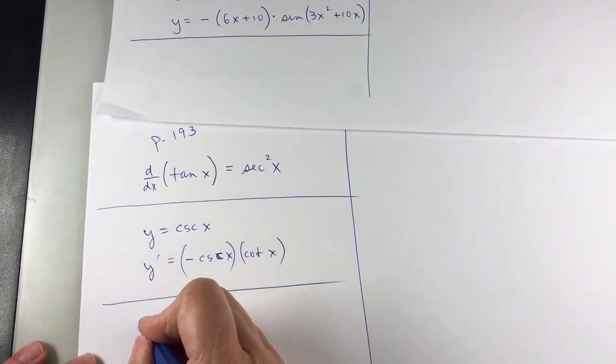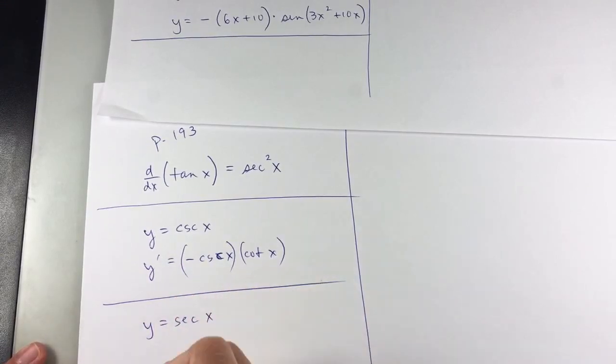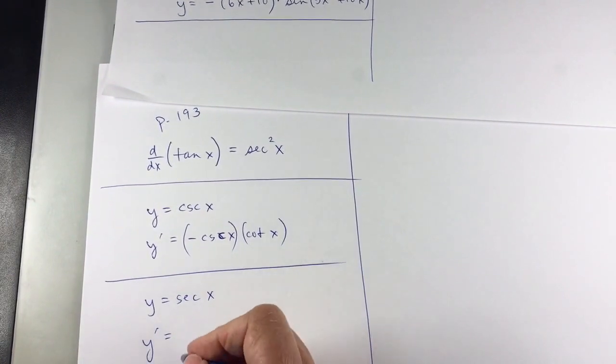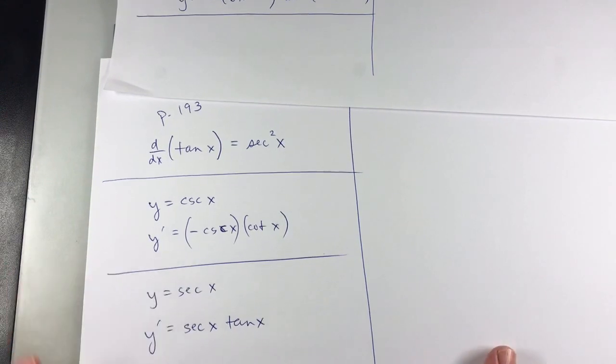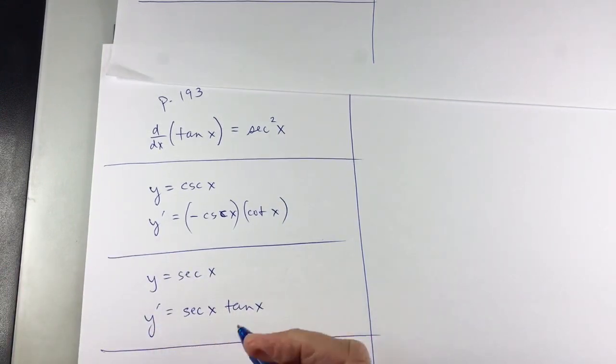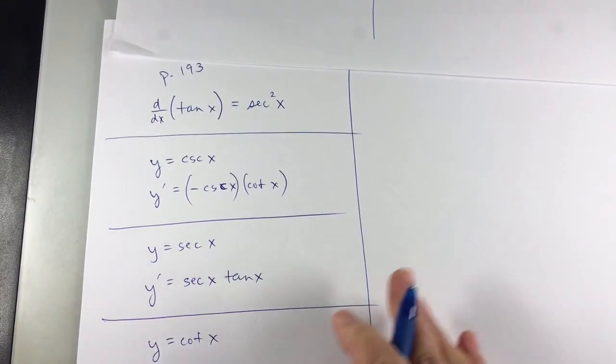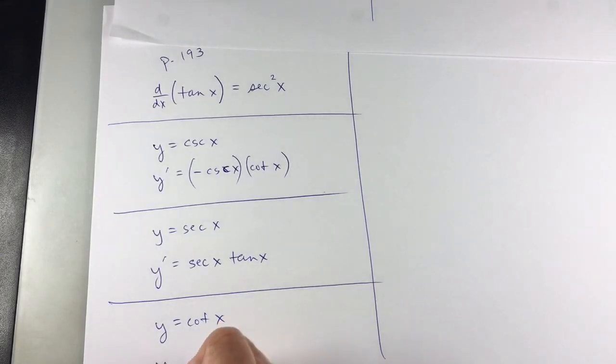If I have y equals secant x, then y prime, that derivative is secant x times tangent x. And actually, the way they show this is they write secant x as 1 over cosine x, and then you could use the quotient rule. Let's see. What else am I missing? I'm missing cotangent x. For y equals cotangent x, I'll say y prime is negative cosecant squared x. So, those are some derivative formulas that you should memorize.